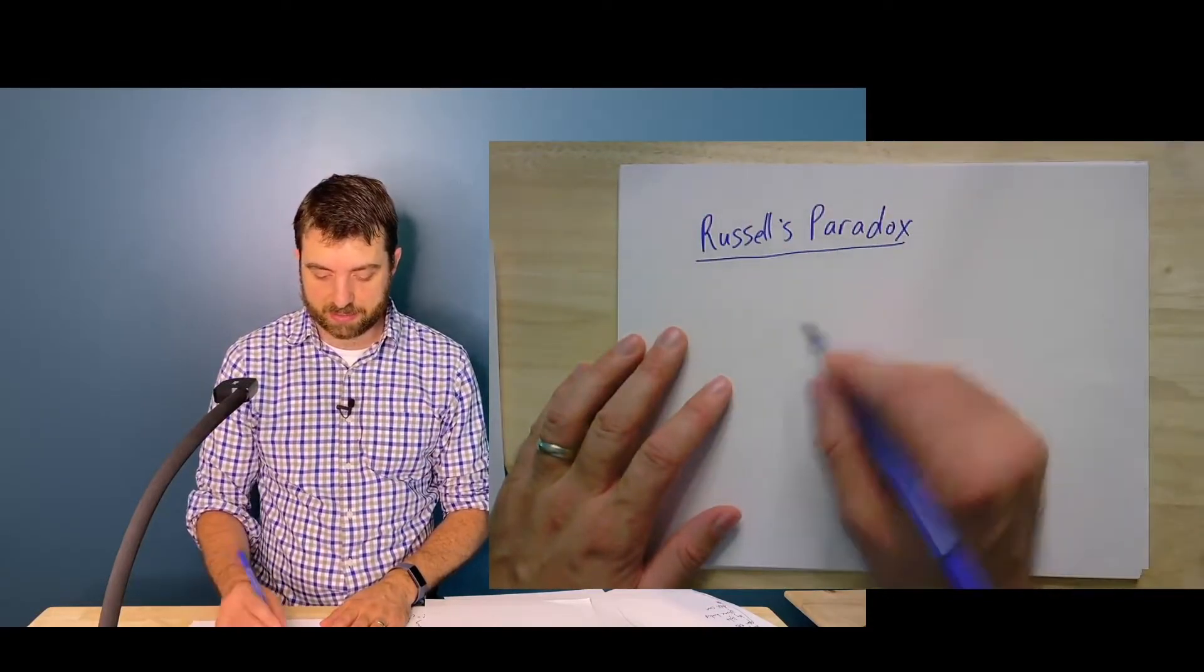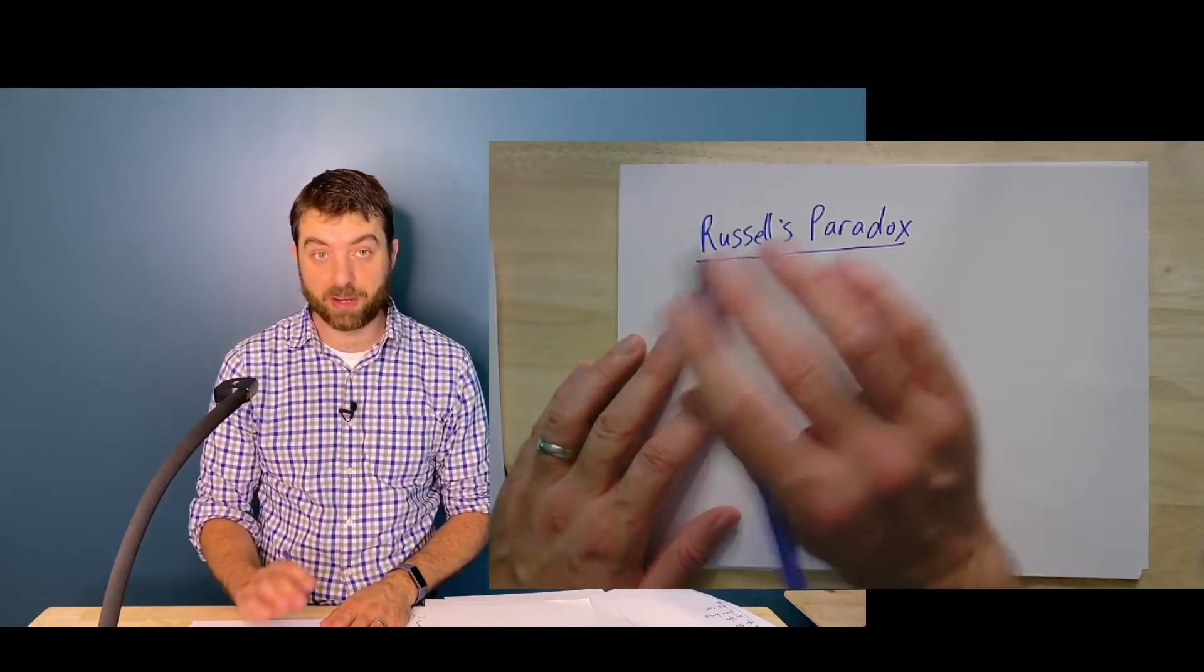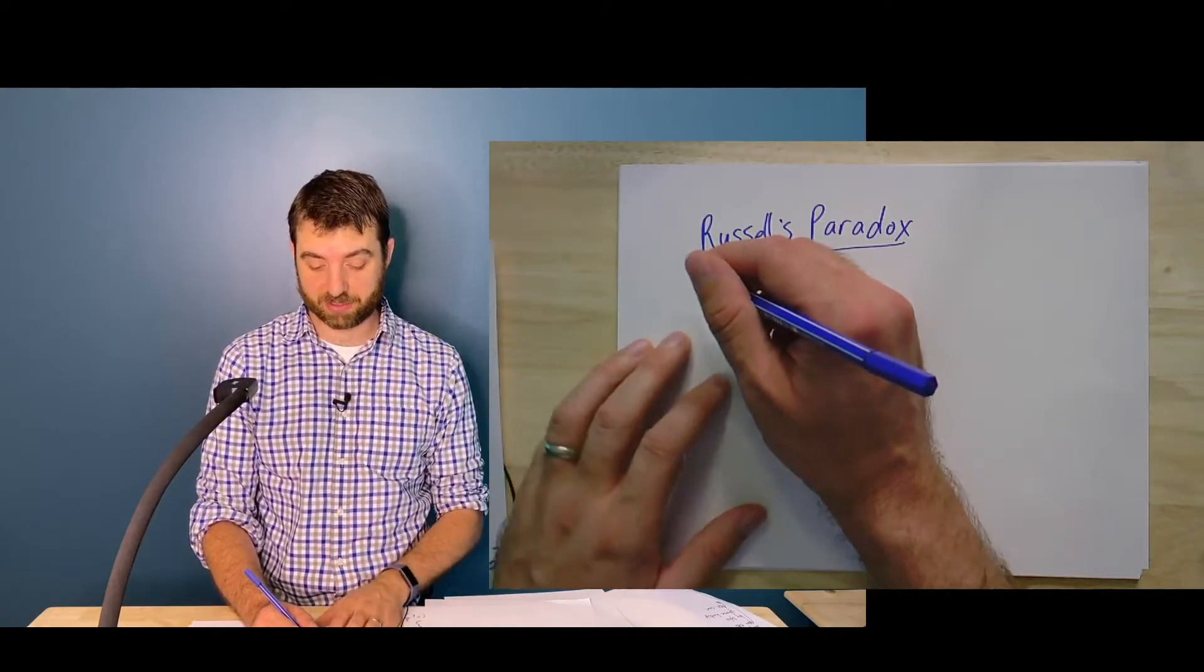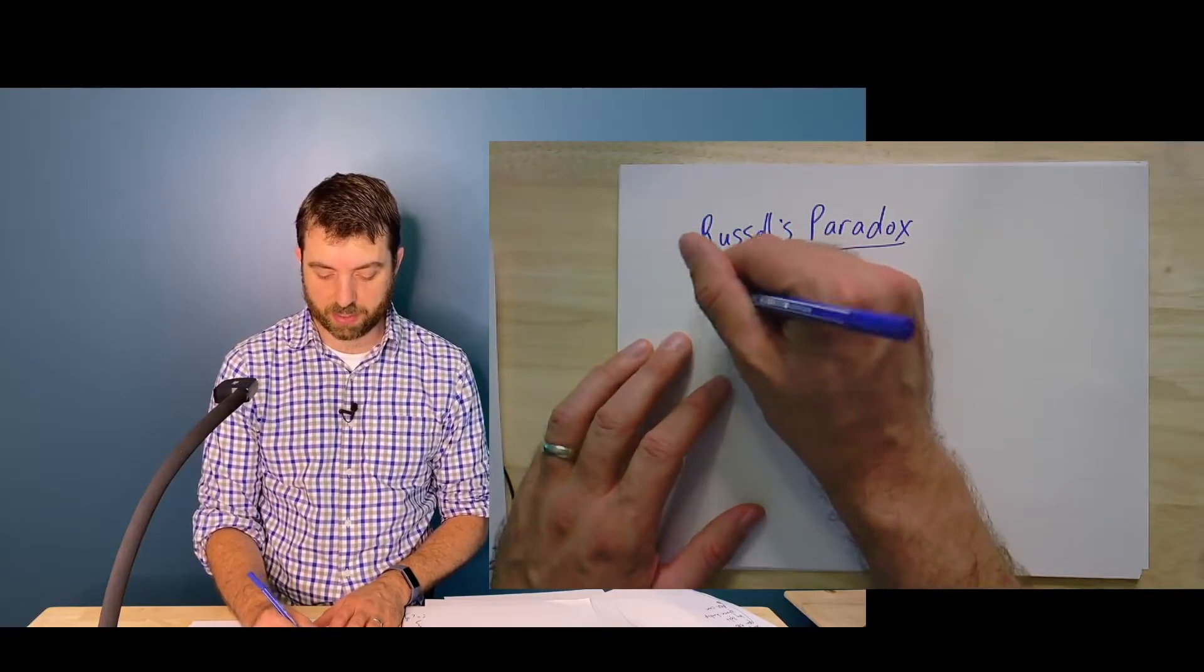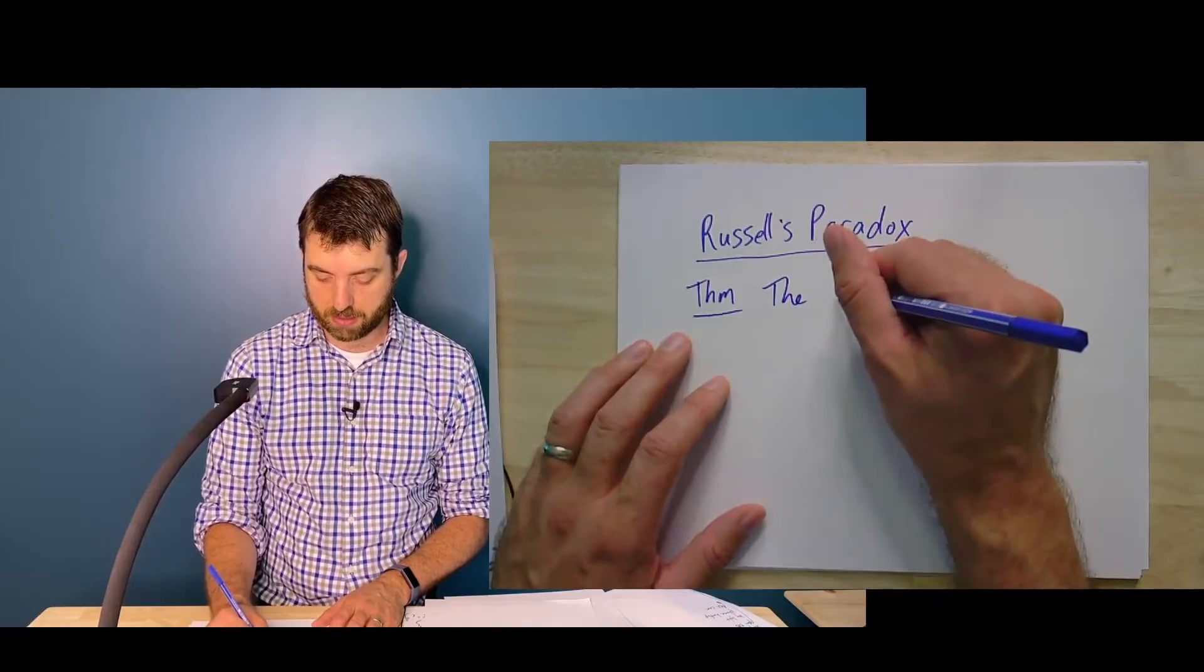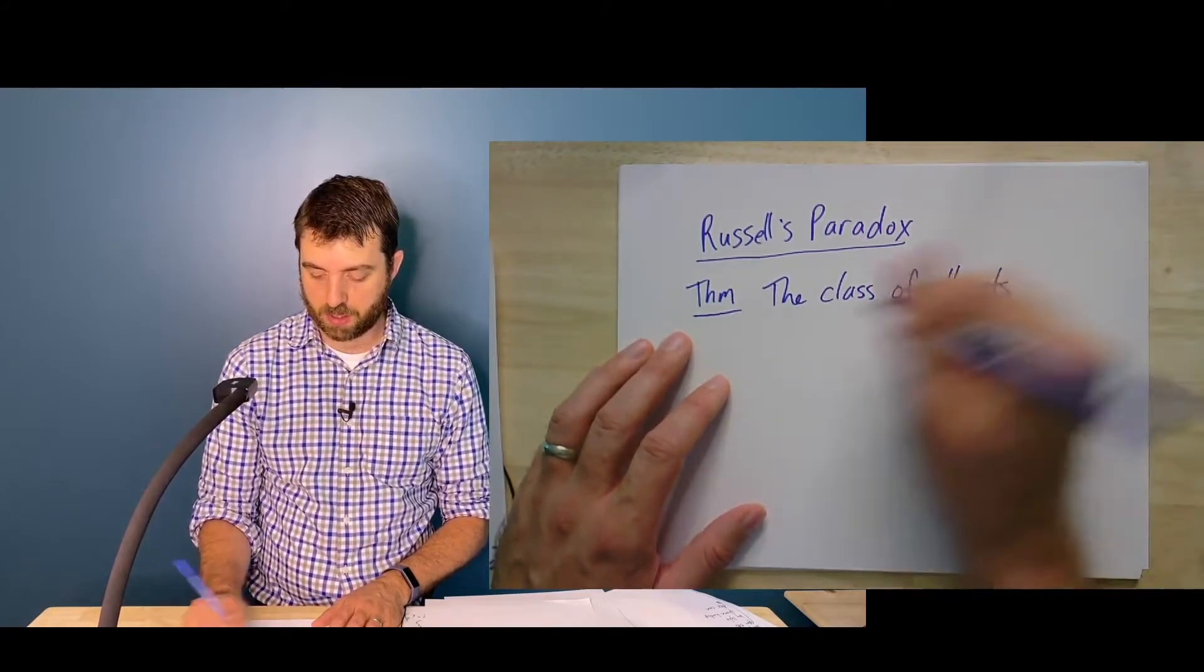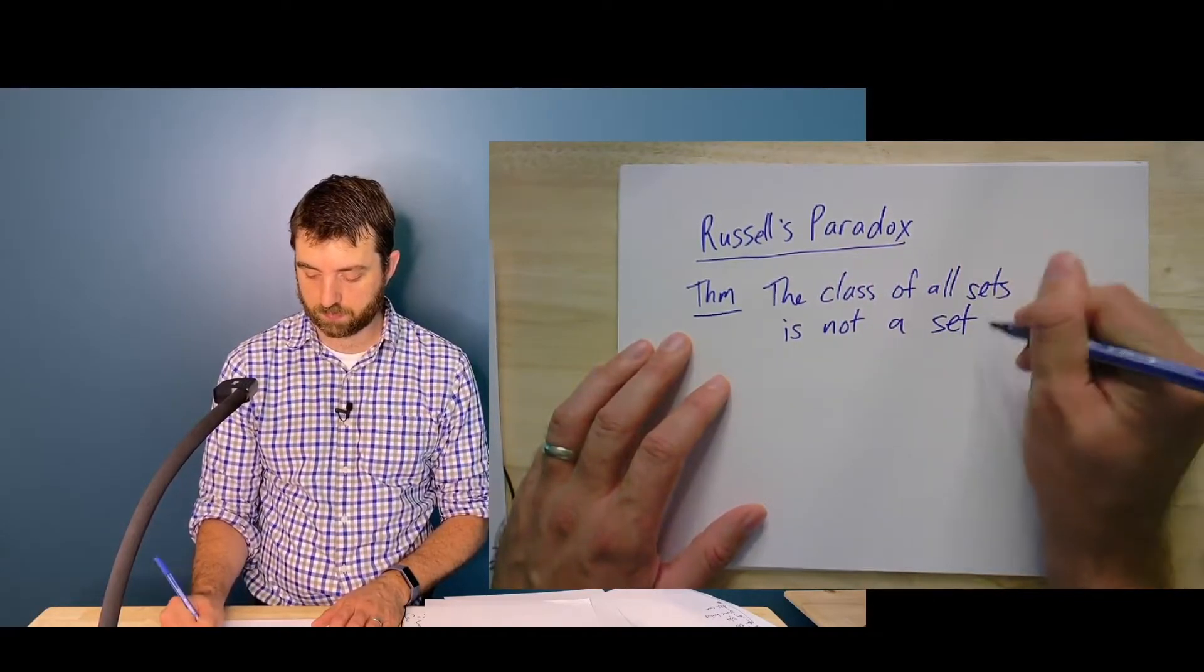In terms of sets, it's stated a bunch of different ways. But one of the, I think, cleanest is the following statement, which is really not a paradox. It's just surprising. Like a lot of the things we call paradoxes in mathematics are just counterintuitive. They're not actually contradictory. And the simplest statement, I think, is something along the following lines. And I'm going to write it as a theorem because it, in fact, is a theorem. The class of all sets is not a set.